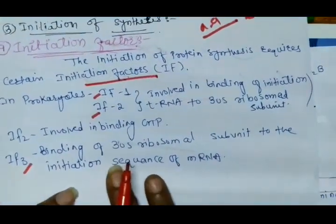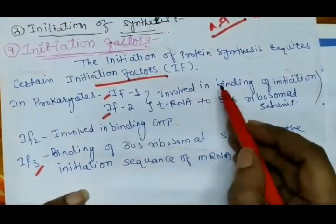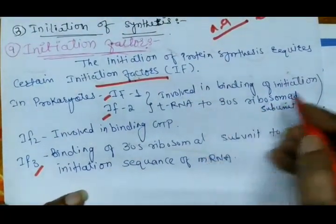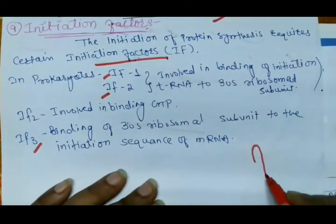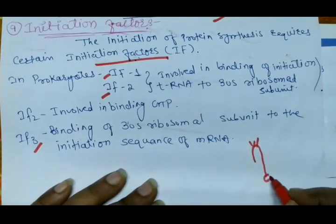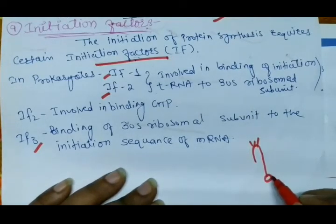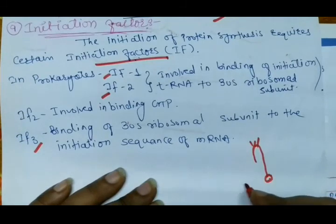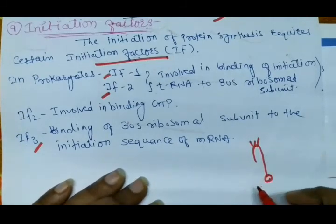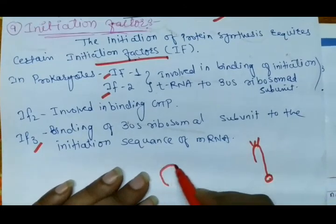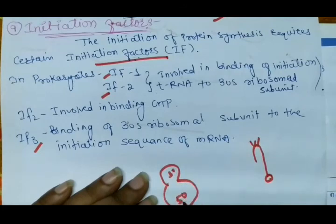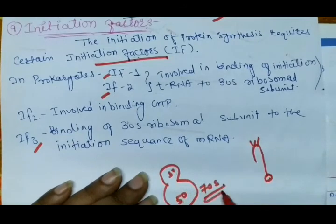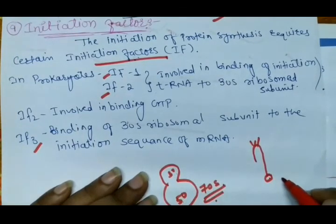IF1 and IF2 are involved in the binding of the initiation tRNA to the 30S ribosomal unit. The tRNA structure with its specific amino acid binds to the 30S ribosomal unit. The ribosome is made up of two subunits — 30S and 50S — which together form the 70S complex.